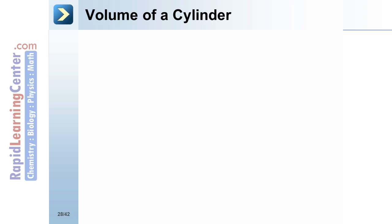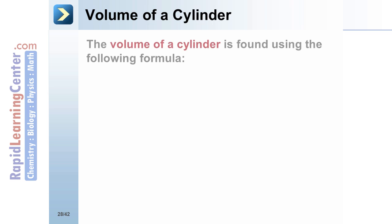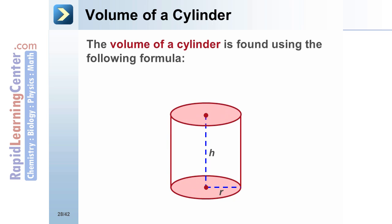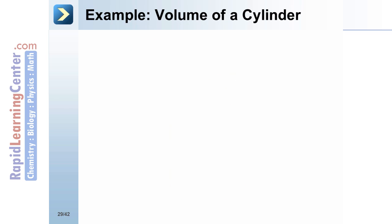Volume of a cylinder. The volume of a cylinder is found using the following formula: V equals pi times H times r squared, where H is the height of the cylinder and r is the radius of the base.